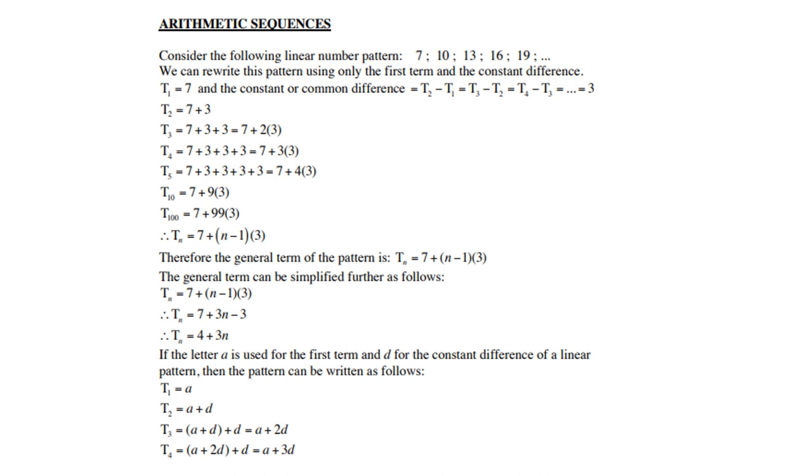So therefore, N is the position of the term, so therefore, 7 plus (N minus 1) times 3. And that also becomes the so-called general term for an arithmetic sequence. So this is very important, the formula can be used like that, or you can remove the brackets, and you get 4 plus 3N. So if the letter A is used for the first term, and D for the constant difference, then we can rewrite the formula as A plus 3D, or we can also say A plus 2D plus D, and more A plus 3D.